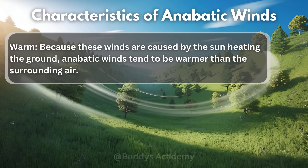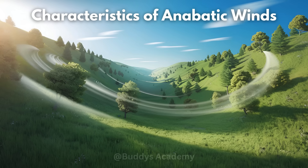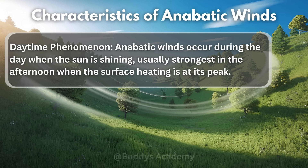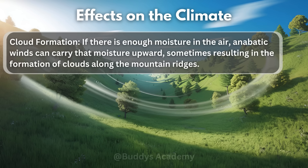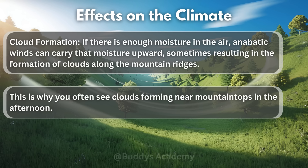Now we will go over the characteristics of anabatic winds. The first characteristic is that it is a warm wind — because these winds are caused by the sun heating the ground, anabatic winds tend to be warmer than the surrounding air. The next characteristic is that anabatic winds occur during the day; they are a daytime phenomenon, usually strongest in the afternoon when surface heating is at its peak. The first effect on climate would be increased temperature — anabatic winds can cause upper slopes to warm up more quickly than the valley floor, influencing temperature variations within a short distance. The next effect would be cloud formation: if there is enough moisture in the air, anabatic winds can carry that moisture upward, sometimes resulting in the formation of clouds along mountain ridges, which is why you often see clouds forming near mountaintops in the afternoon.